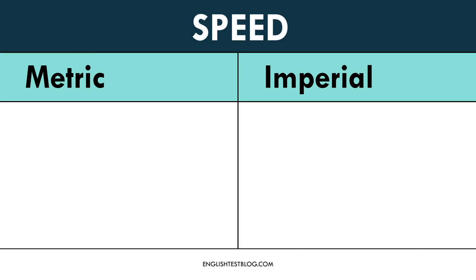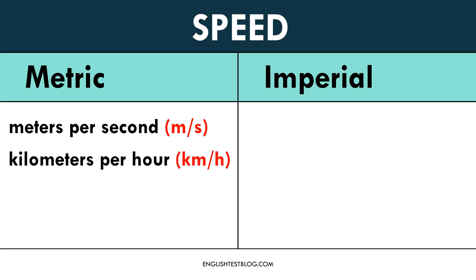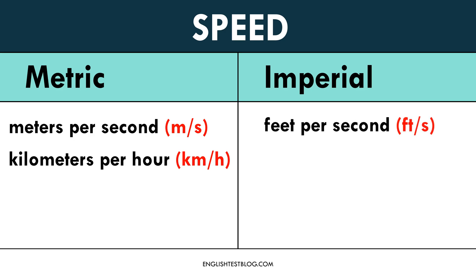Let's move on to speed. In the metric system, meters per second is used in physics or sports, and kilometers per hour measures how many kilometers a vehicle travels in one hour. In the imperial system, feet per second is used in certain sports or physics, while miles per hour measures how many miles a vehicle travels in one hour.